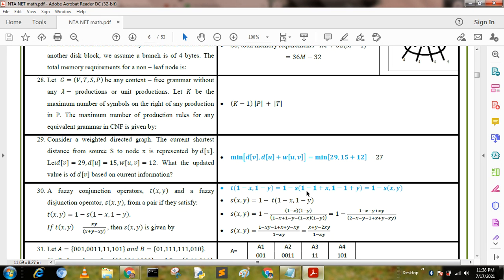When we get the formula T(1-x, 1-y) = (1-x)(1-y) / (1-x + 1-y - (1-x)(1-y)), we deduce this value and get the updated value. We put this in the formula: S(x,y) = 1 - [(1-x)(1-y) / (1-x + 1-y - (1-x)(1-y))]. We derive this formula and get: (x + y - 2xy) / (1 - xy). This is the answer.